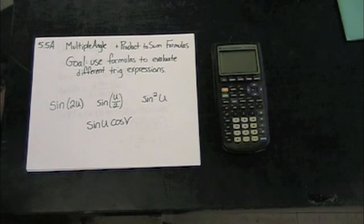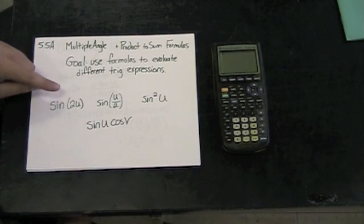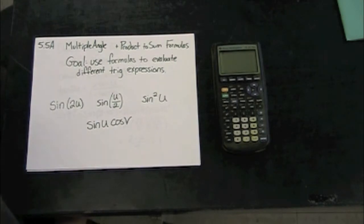Examples of some of these guys look like the sine of the angle 2 times u, sine of the angle u divided by 2, sine squared of an angle, and the product of sine of an angle and cosine of an angle.